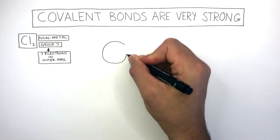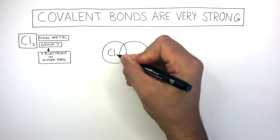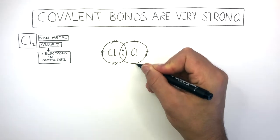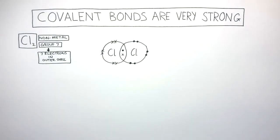So when I draw the dot and cross diagram of a chlorine molecule, I know to draw 7 electrons in each outer shell. So this is a dot and cross diagram of a chlorine molecule.